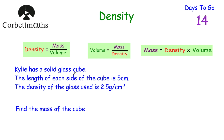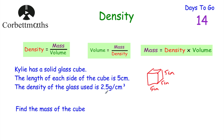Next question: Kylie has a solid glass cube. It's a cube, so it looks something like this. The length of each side is 5 centimetres, so the width, depth, and height are all 5 centimetres. The density of the glass is 2.5 grams per centimetre cubed, meaning every centimetre cubed of this glass has a mass of 2.5 grams. Find the mass of the cube — press pause now and work it out.